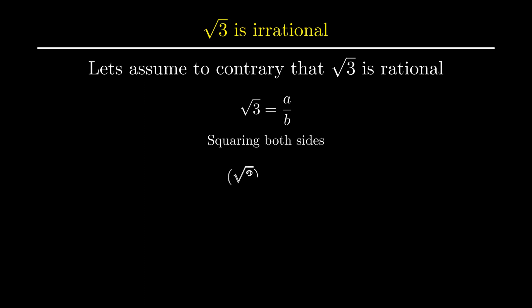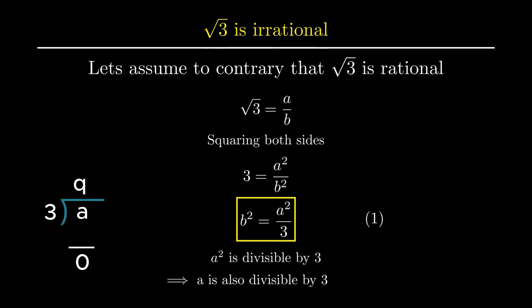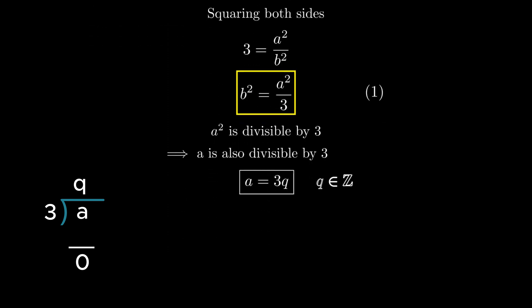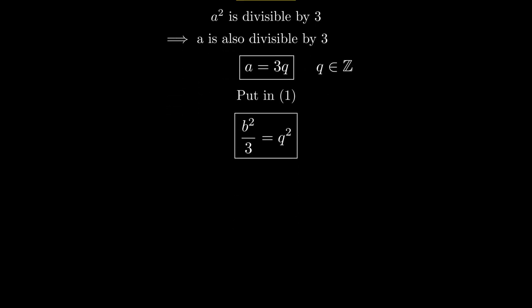Since root of 3 is non-repeating and non-terminating, to remove the root, squaring is done on both sides to get 3 equals a² over b². On transposing, b² equals a² over 3. Since a² is divisible by 3, using the theorem, a is also divisible by 3. Thus a equals 3q, where q is an integer. Now substituting a equals 3q into equation 1, we get b² equals 3q², which gives b² over 3 equals q².